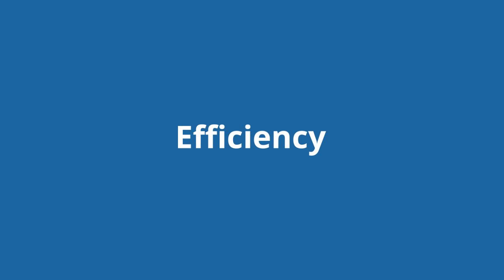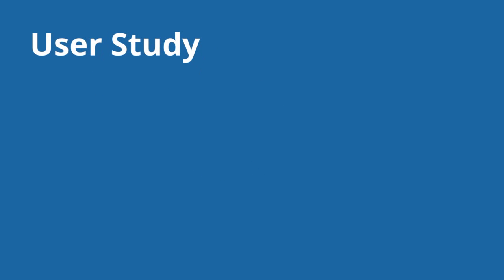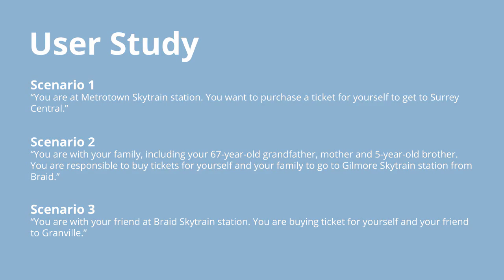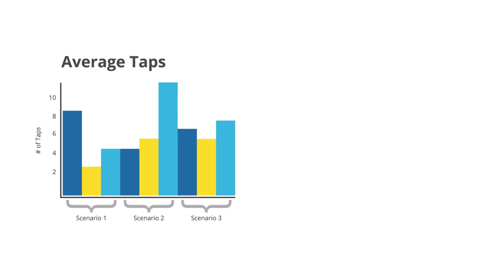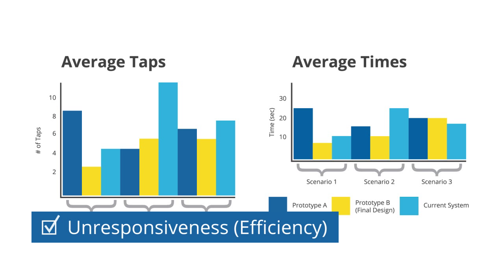Efficiency is the most important aspect of our redesign. In our user study, we measured the number of taps and the speed it takes to complete three different scenarios. We tested two variations of our prototype along with the original system, and discovered that prototype P has been the most consistent in obtaining the least number of taps and taking the least amount of time to purchase tickets.